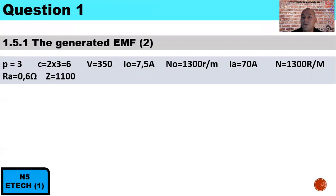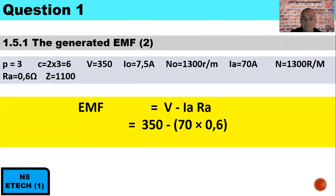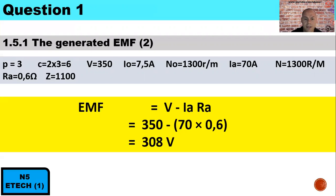Question 1.5.1: Calculate the generated EMF. The armature resistance is 0.6 ohms and the number of conductors is 1,100. For a motor, generated EMF = terminal voltage − volt drop across the armature = 350 − (70 × 0.6). Therefore, the generated EMF is 308 volts.